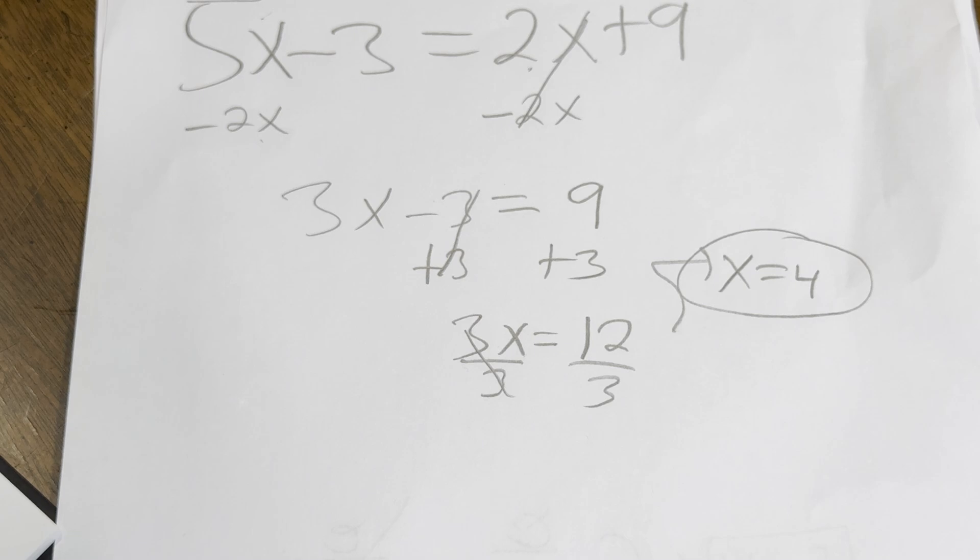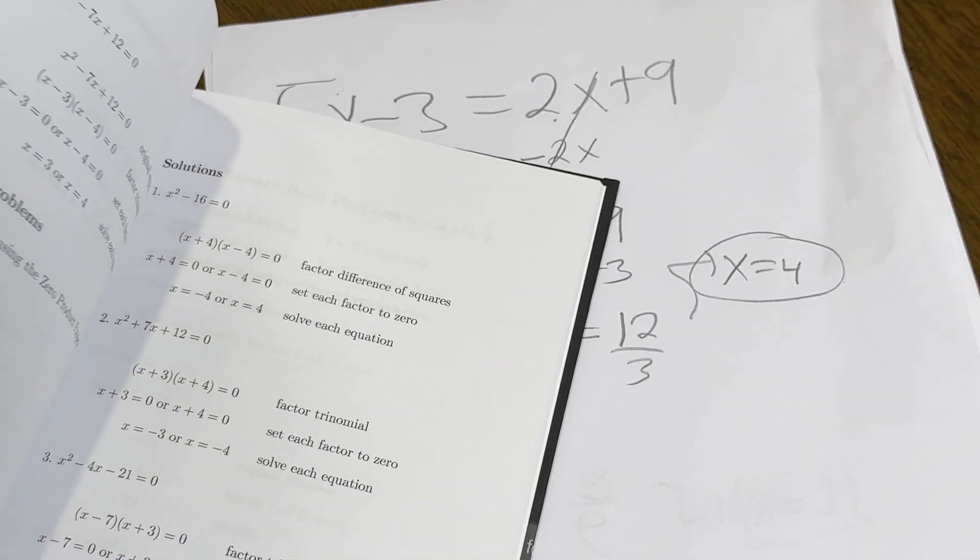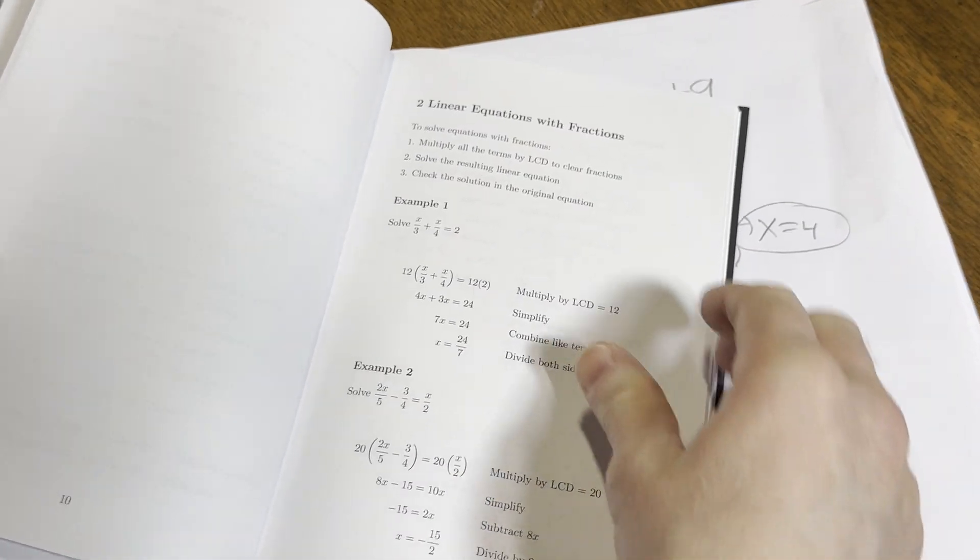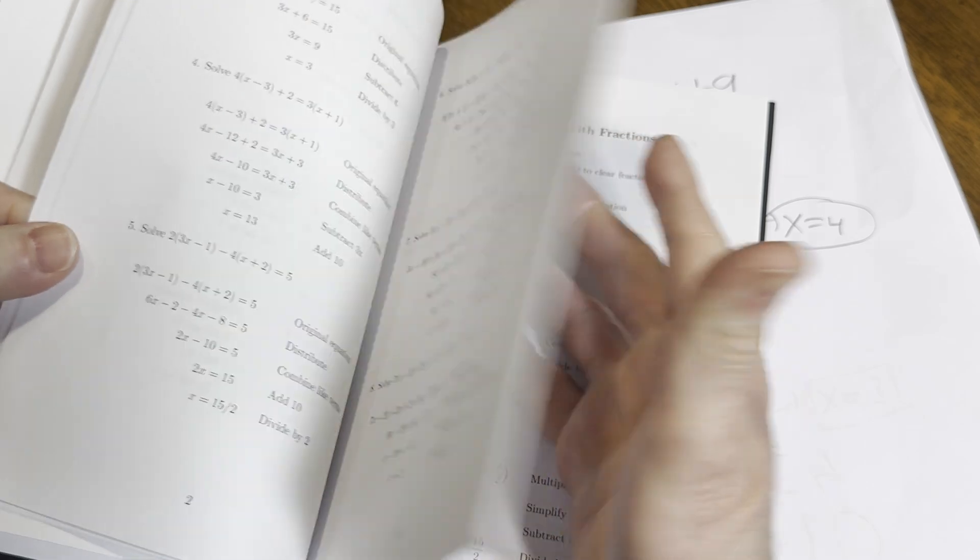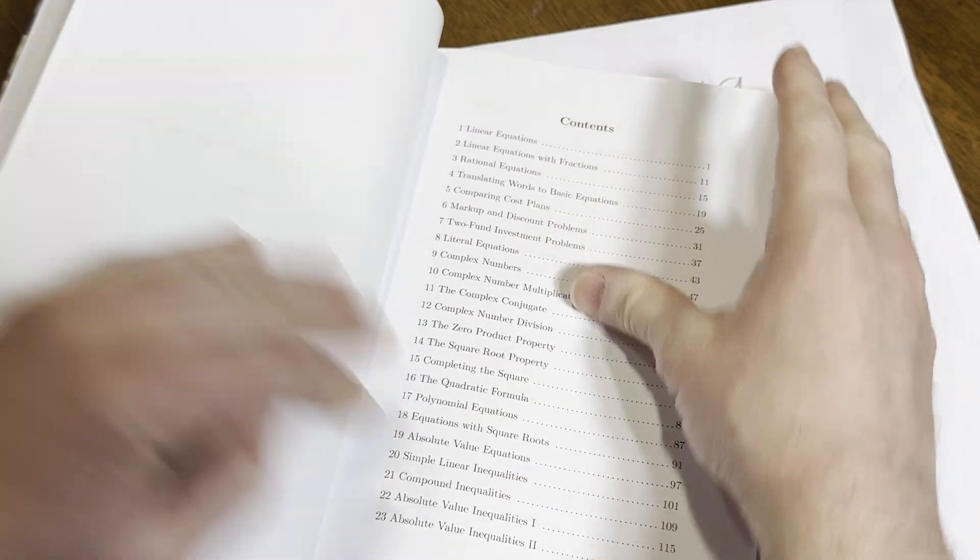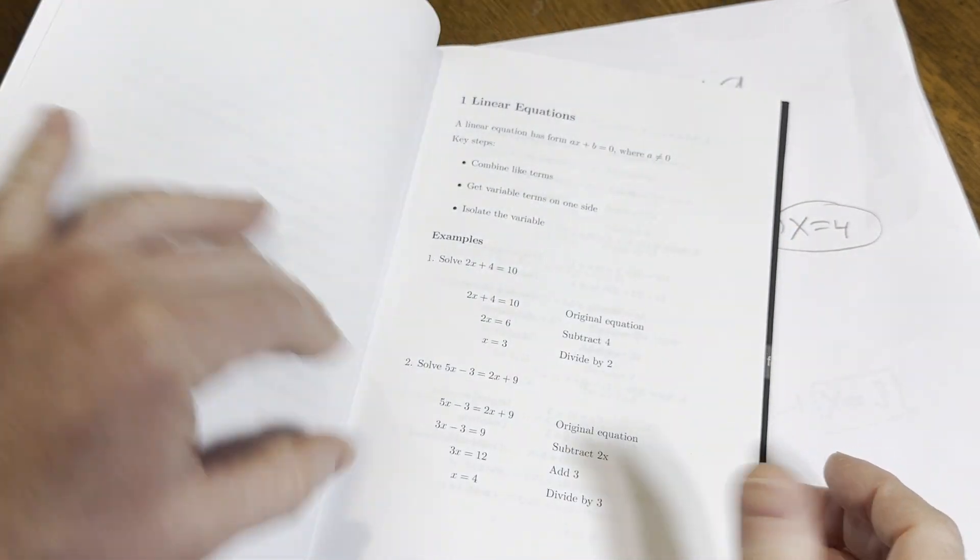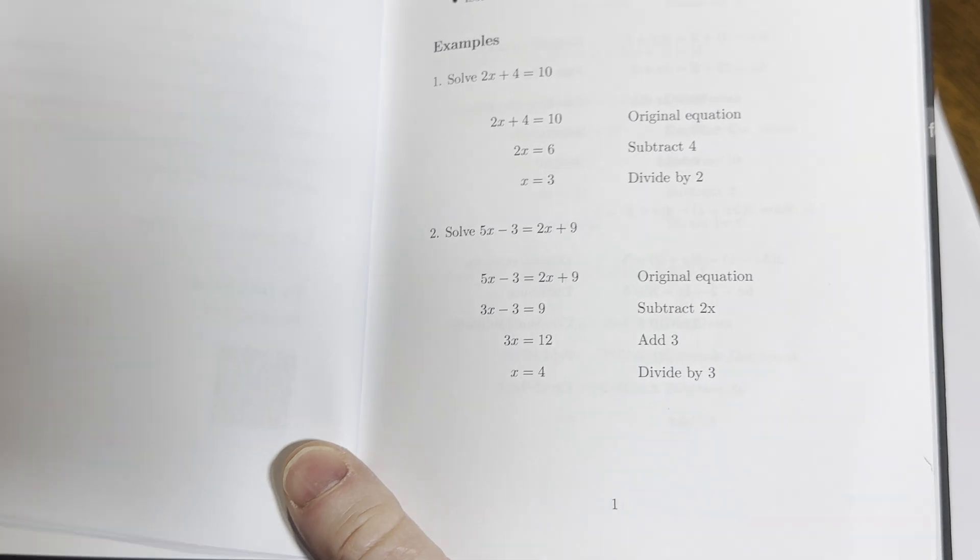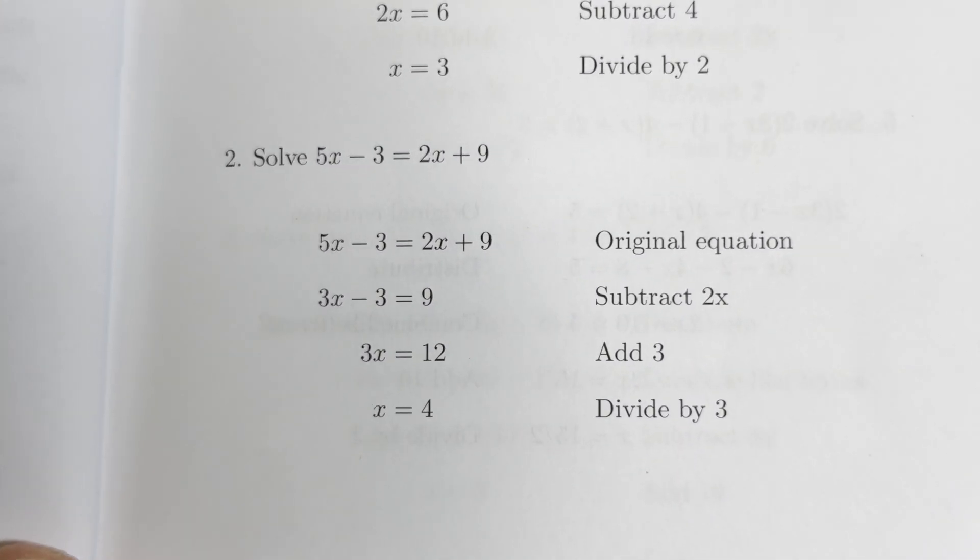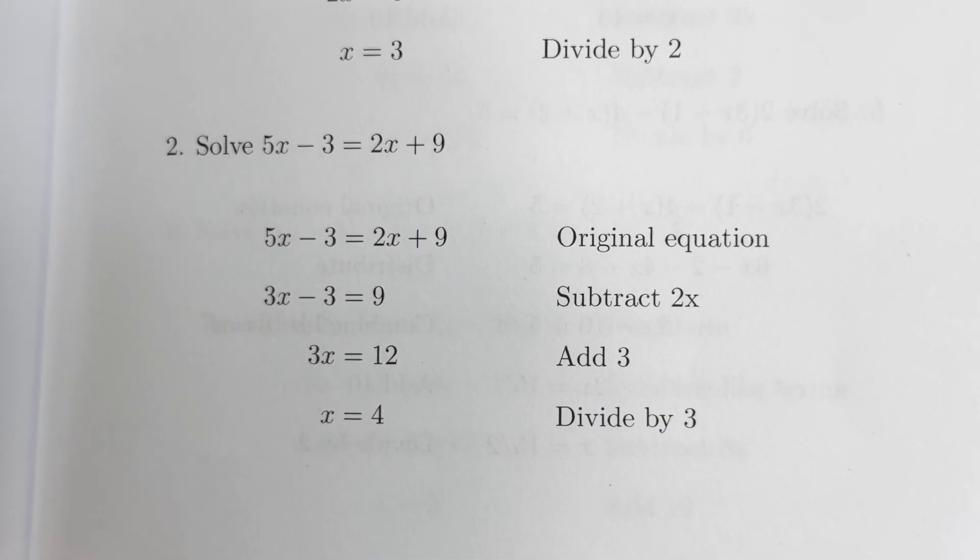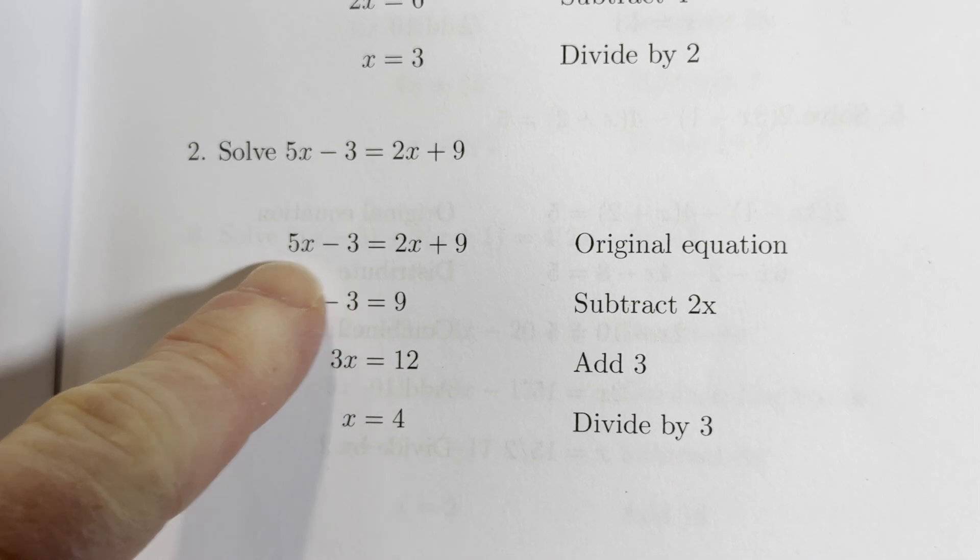Let's just double check. Let's look inside the book, because the book has full solutions to every single example and exercise. So this was the very first section. This is the easiest stuff in the book. Looks like we did it correctly, right? So there's the original equation.